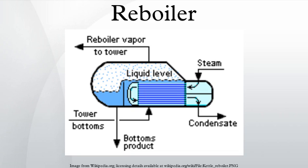Forced Circulation Reboilers: A forced circulation reboiler uses a pump to circulate the column bottom's liquid through the reboiler. This is useful if the reboiler must be located far from the column, or if the bottoms product is extremely viscous. Some fluids are temperature sensitive, such as those subject to polymerization by contact with high-temperature heat transfer tube walls. High liquid recirculation rates are used to reduce tube wall temperatures, thereby reducing polymerization on the tube and associated fouling.